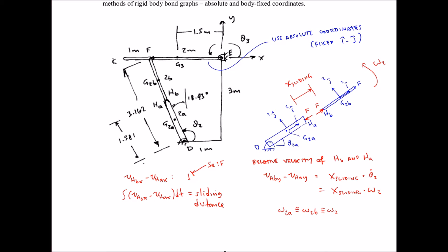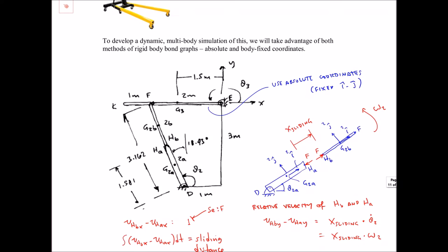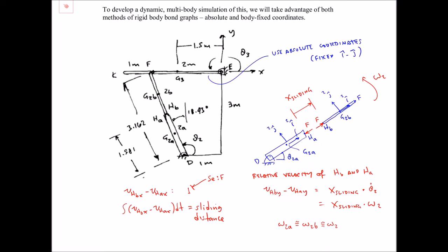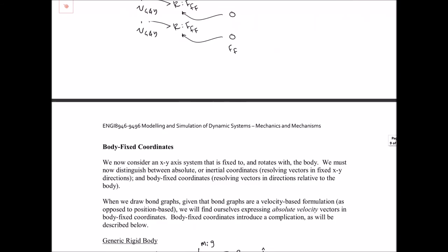In this video I'd like to talk about the bond graph implementation of a shop crane model, shown schematically in this figure with some dimensions given. Body 3 is the horizontal boom, which we're going to model using absolute coordinates or inertial coordinates — fixed I and J directions — requiring a rigid body with connection points F and E, where point E will be pinned to a fixed reference frame.